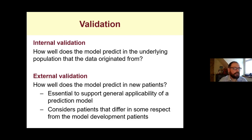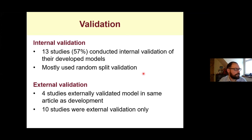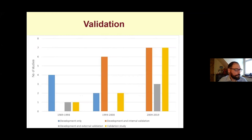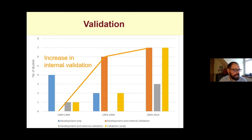In our systematic review, 13 studies conducted internal validations — just over half — and unfortunately most used random split validation. Four studies externally validated their model in the same article as development, which is fine, and 10 studies were external validations by independent researchers. Over time, trends show researchers are conducting more internal validation with their model development, and there are more separate external validations as well, which is positive.